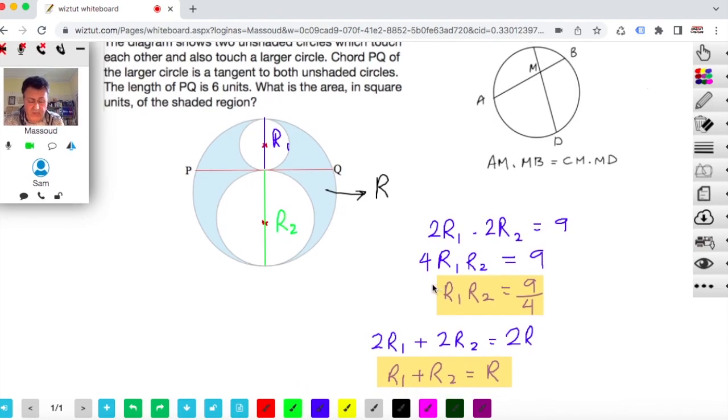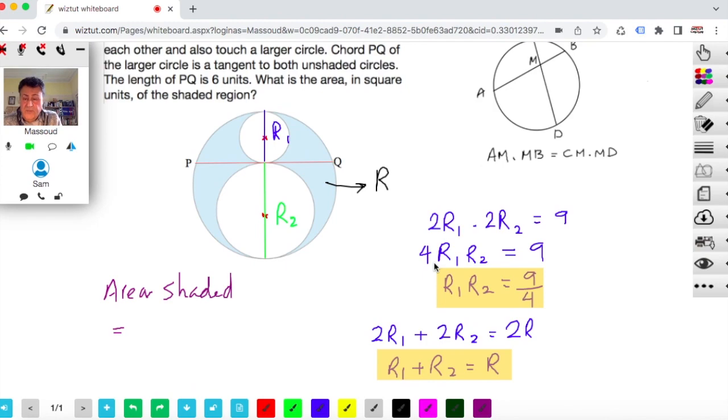Okay, now the area that we're interested in, so let's write the rest of it in a different color so it stands up. So the area of the shaded area, that will be equal to the area of the whole circle, so that would be pi times R squared, minus the two smaller ones, so that would be pi times R1 squared, and also minus pi R2 squared.